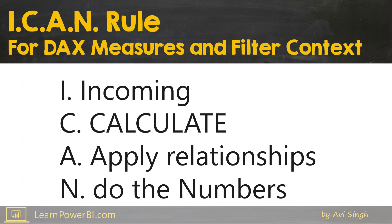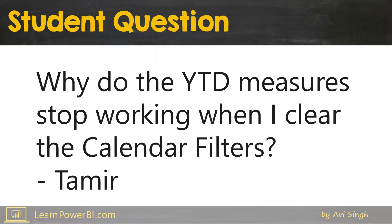I've already covered the I CAN rule in a separate video — you can find a link in the details. Here I will walk you through an example of applying the rule. This question came from one of the students in my Learn Power BI class, the Mirror, and he asked: why do the year-to-date measures stop working when I clear the calendar filters?